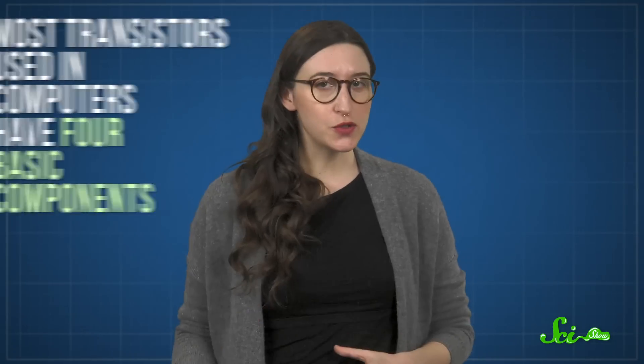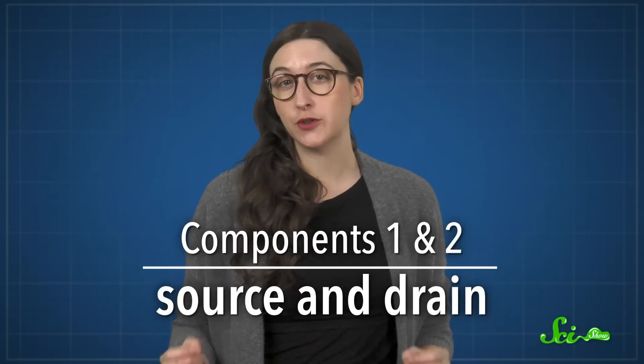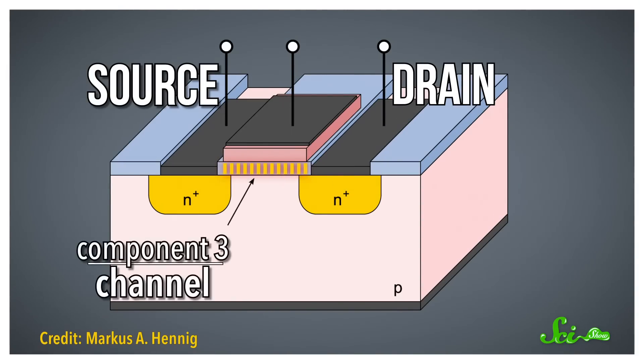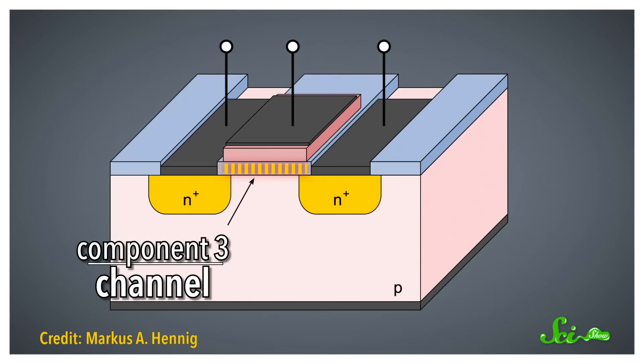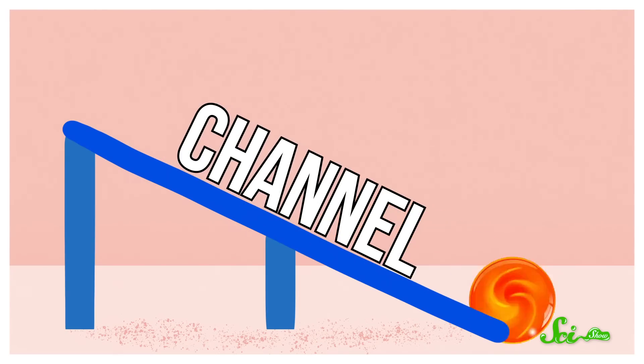But there are some serious manufacturing challenges to solve first. Most transistors used in computers have four basic components. As an electrical switch, a transistor needs places for the electricity to come from and to flow to. Those electrical contacts are called the source and drain. Electricity flows from the source to the drain through a region called the channel, which is usually a short ridge of silicon. It's like the electron at the source is a marble at the top of a track — it wants to roll down toward the drain. The channel is the track, the path the ball would take as it rolls down.